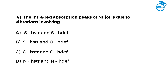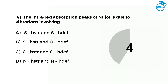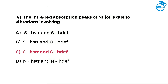I hope you are ready to take the next question. The infrared absorption peaks of neutral compounds are due to vibrations involving. Option A: S-H stretch and S-H torsion. Option B: S-H stretch and no H torsion. Option C: C-H stretch and C-H torsion. Option D: N-H stretch and N-H torsion. Write your answer in the comments. The right option is C, that is C-H stretch and C-H torsion.